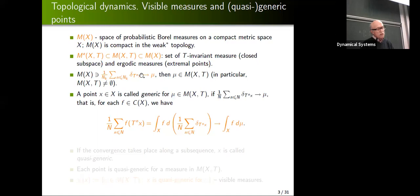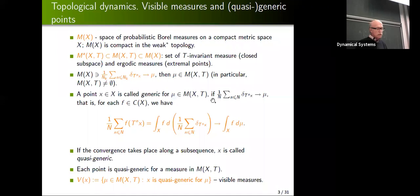Because of compactness, we will obtain invariant measures this way and this set is never empty. What may happen when we look at this sequence of empiric measures: it may converge, or it may converge only along a subsequence. A point is generic if the sequence of empiric measures converges. If it takes place only along a subsequence, it is called quasi-generic. Each point is quasi-generic because of compactness. Those measures for which there is a quasi-generic point are called visible measures.